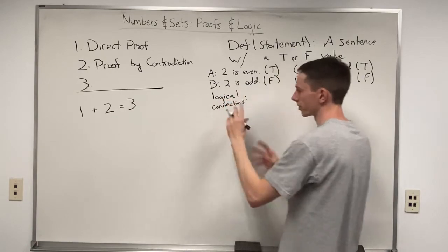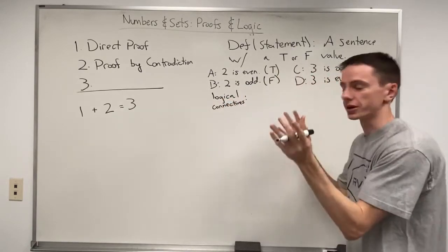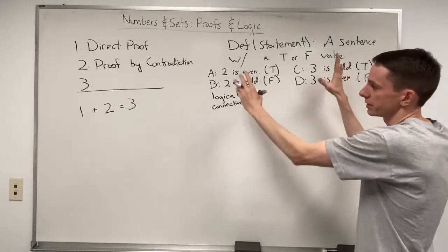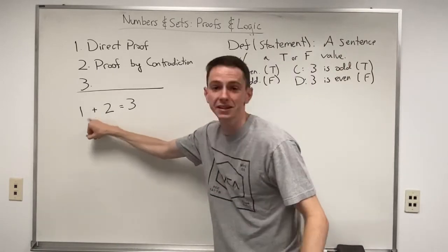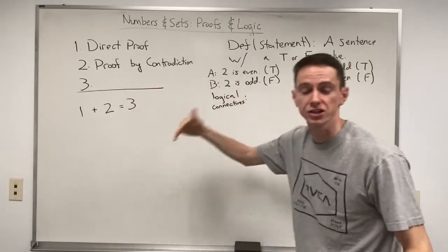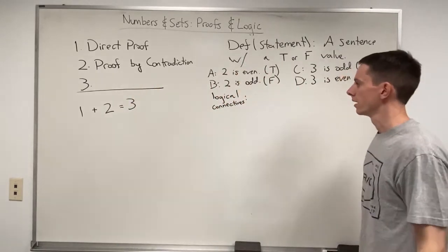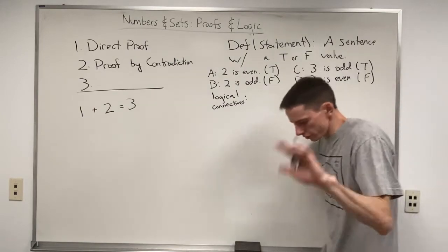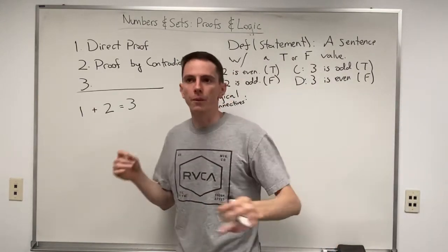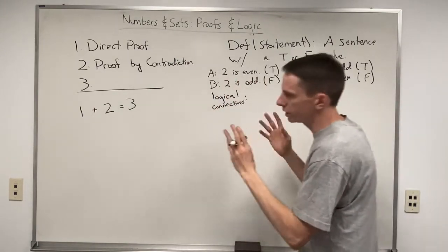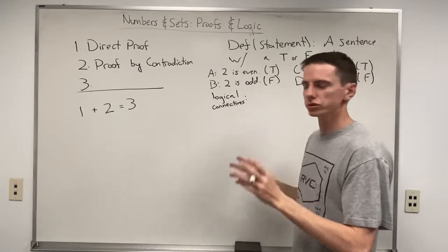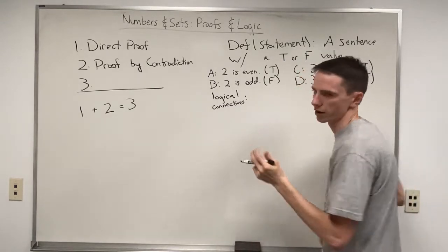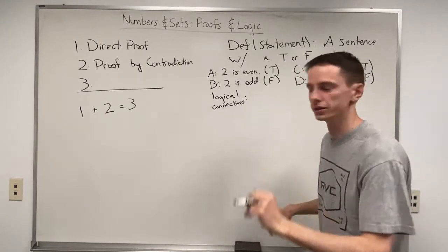Because we have statements or sentences rather than numbers, we need to come up with new operations — what some textbooks call logical connectives. These logical connectives can act on statements the way addition and subtraction act on numbers. There are three mostly fundamental ones that get brought up initially.